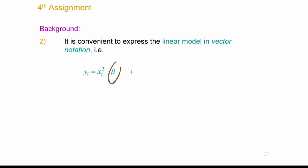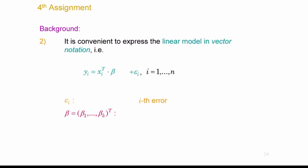Beta is a column vector. This is the vector of parameters you need to estimate. Yi is the i-th observation of the response, and xi-transpose is the i-th row of the design matrix X. There are K entries in the parameter vector, so this is a K-by-1 vector. The total number of parameters including the noise variance is K plus one.